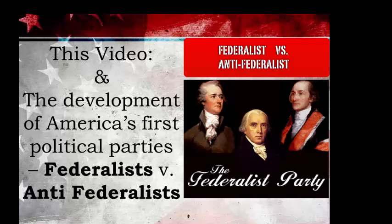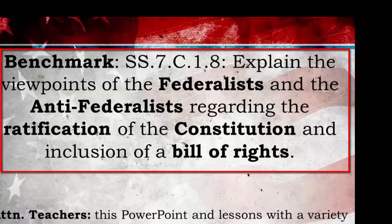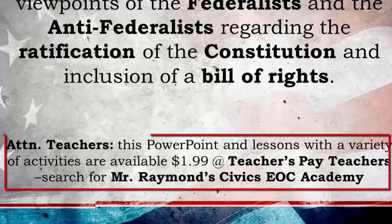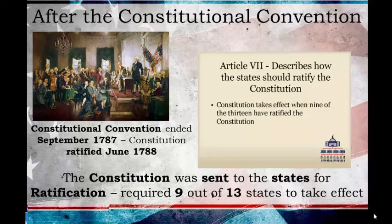Today we are looking at the period between the drafting of the Constitution and its ratification, as this was the period in which the states and the people debated this new document and the extended powers it would give to the federal government — and more specifically, the creation of America's first two political parties: the Federalists and the Anti-Federalists. The Anti-Federalists would go on to become the Democratic Republican Party. Our benchmark states to explain the viewpoints of the Federalists and Anti-Federalists regarding ratification of the Constitution. The Constitutional Convention came to an end in September of 1787, but would not be ratified until 9 out of 13 states approved.